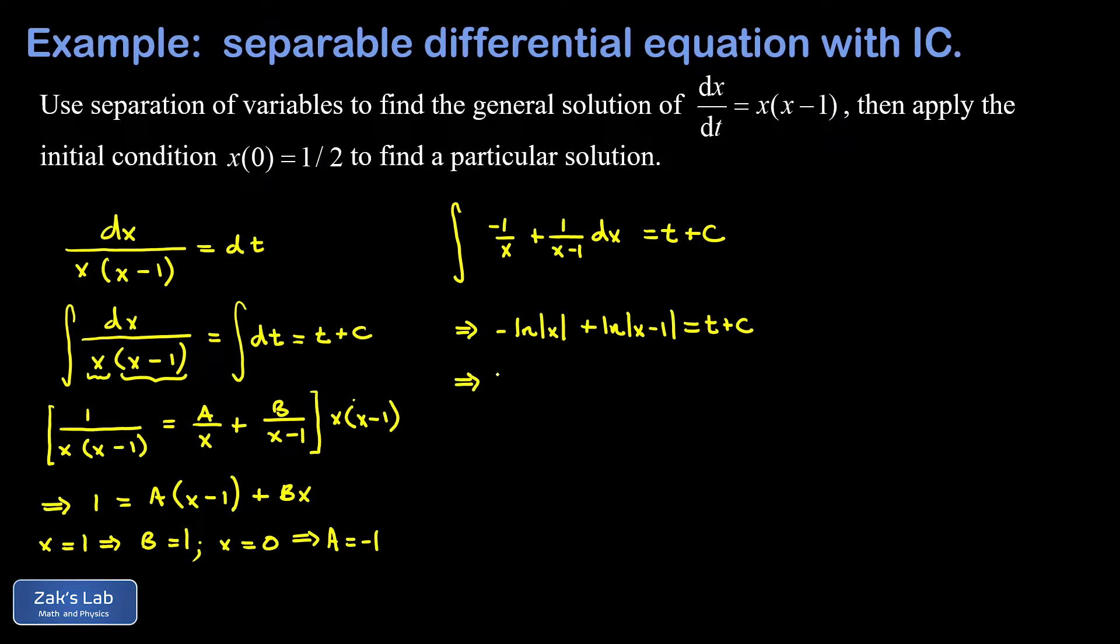So our next goal is to solve for x explicitly as a function of t. And to get this done, we need to combine our logs into a single logarithmic expression. So this is natural log absolute value (x-1)/x. And there we're just using the log property that the log of a difference is the same as the quotient of the logs. And the first term here was the one being subtracted. On the right hand side, t plus c.